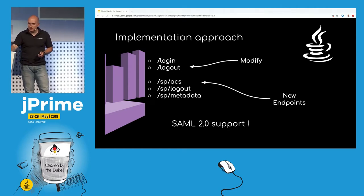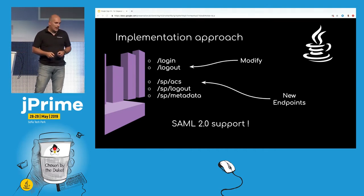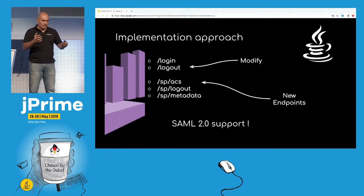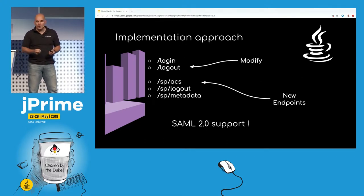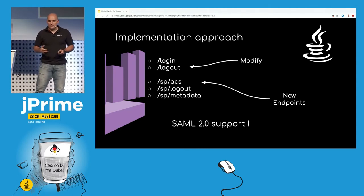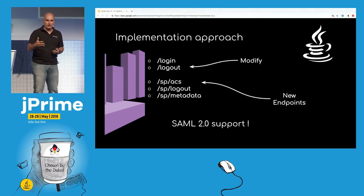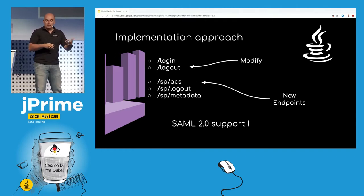The SAML protocol requires one mandatory endpoint at the service provider: the ACS, which stands for Assertion Consumer Service. This is where step six happens — after verification of the response, the identity is fetched along with additional session information. The identity provider maintains sessions for logged-in users on their end, including session expiration, so we receive that too in order to invalidate sessions on our side.